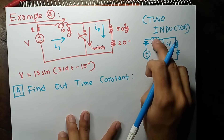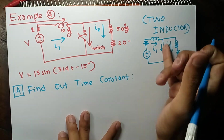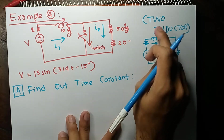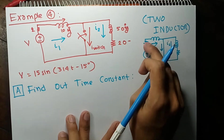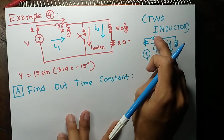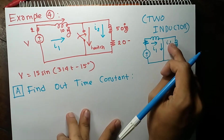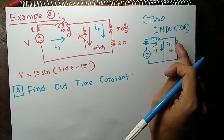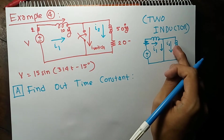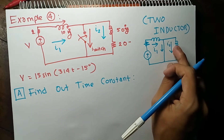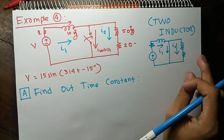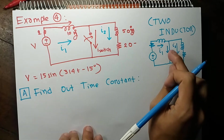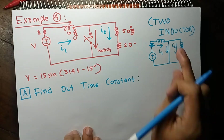This current, as this branch is short, will only be affected by this one inductor. And this current will also only be affected by this inductor. So we can apply our previously known methods and find out what the current through the switch will be.